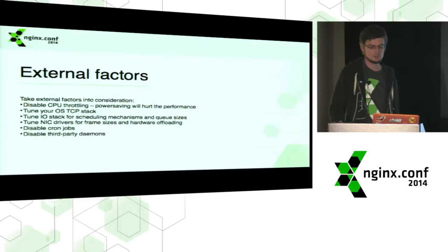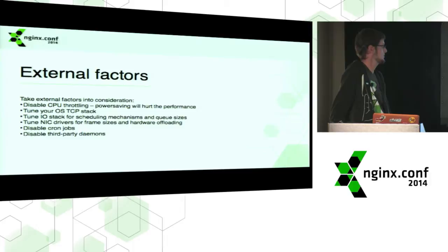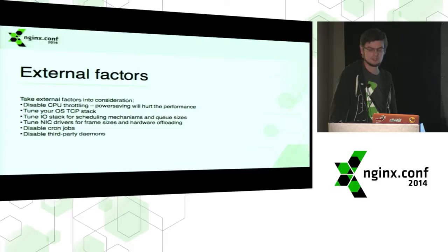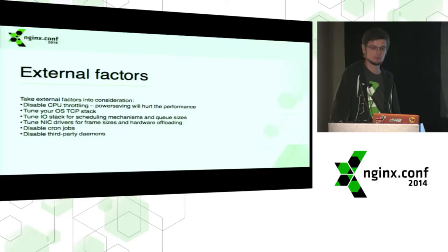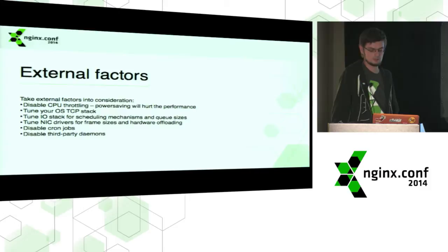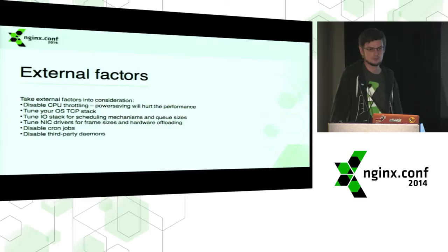For network-based testing, you also need to configure the network interface cards. Most of the time they are reasonably configured by your OS, but sometimes you need to adjust the frame size or enable hardware offloading of checksums for receive and transmit queues. You also need to make sure your testing environment is sterile and clean — cron jobs running during a benchmark can skew results greatly. A log rotator running gzip on log files is not good, and you need to disable third-party daemons that might spontaneously take up CPU.